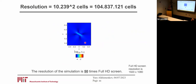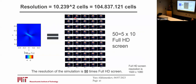But using our relaxation method, we can solve quasi-static problems in much larger domains corresponding to 100 million or 1 billion cells. What does 10,000 by 10,000 mean? Here you can see a combination of 50 Full HD screens — and if we combine the resolution of all 50 screens, we end up with the same resolution as in our numerical simulation.